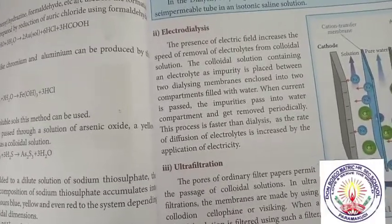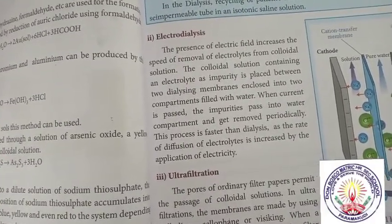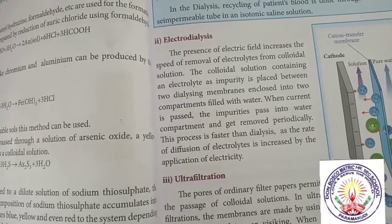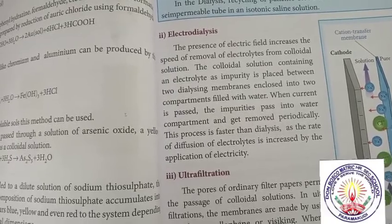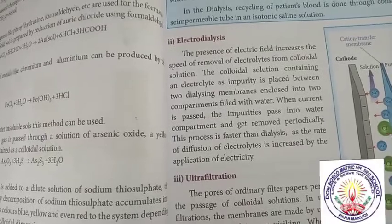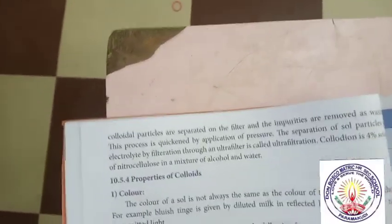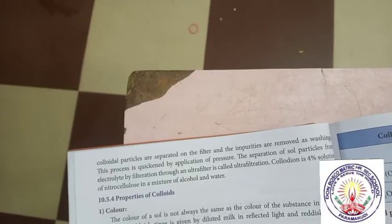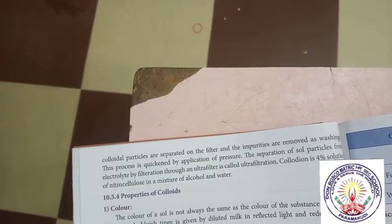Ultrafiltration: the pores of ordinary filter paper permit the passage of colloidal particles. In ultrafiltration, the membranes are made using collodion, cellophane, or similar materials. When a colloidal solution is filtered using such a filter, colloidal particles are separated on the filter and the impurities are removed as washings. The separation of colloidal particles from electrolyte by filtration through ultrafiltration membrane is called ultrafiltration. This process is quickened by application of pressure.